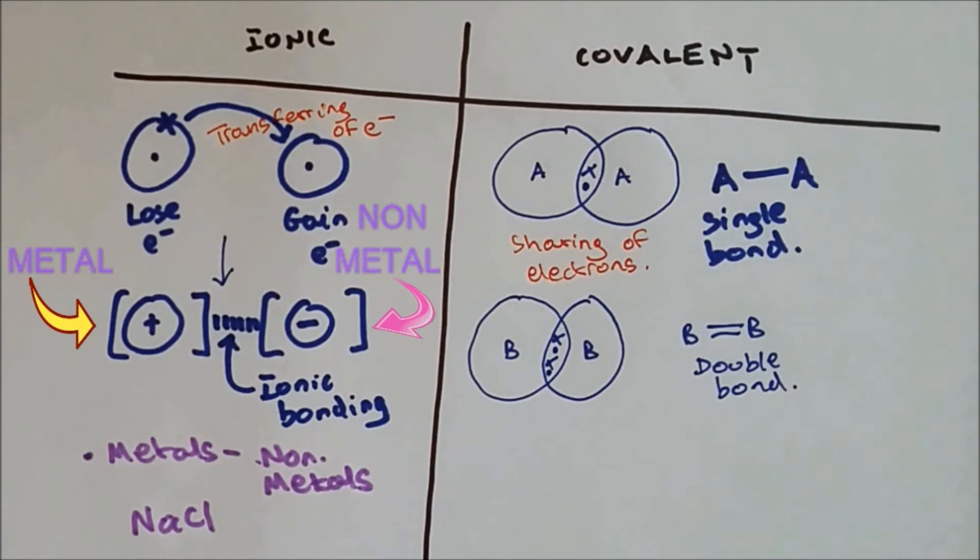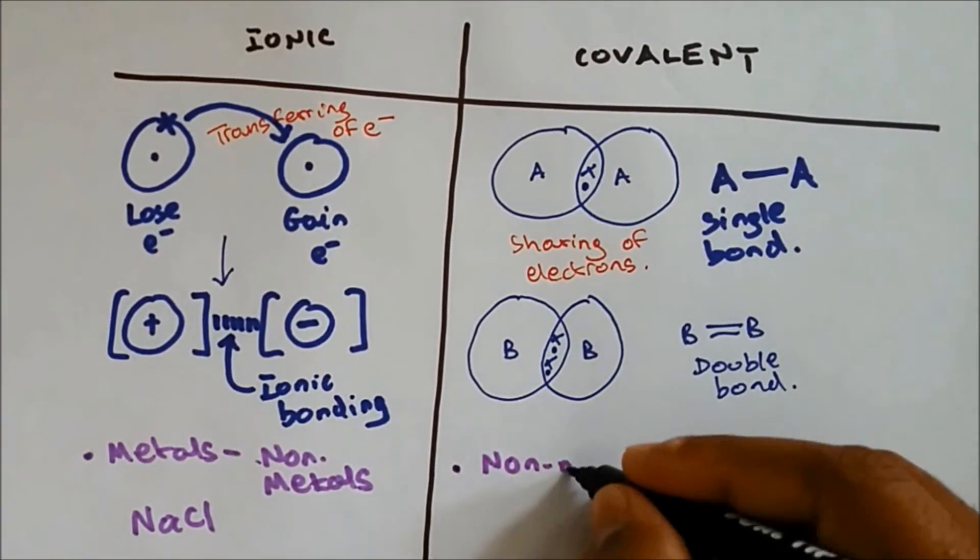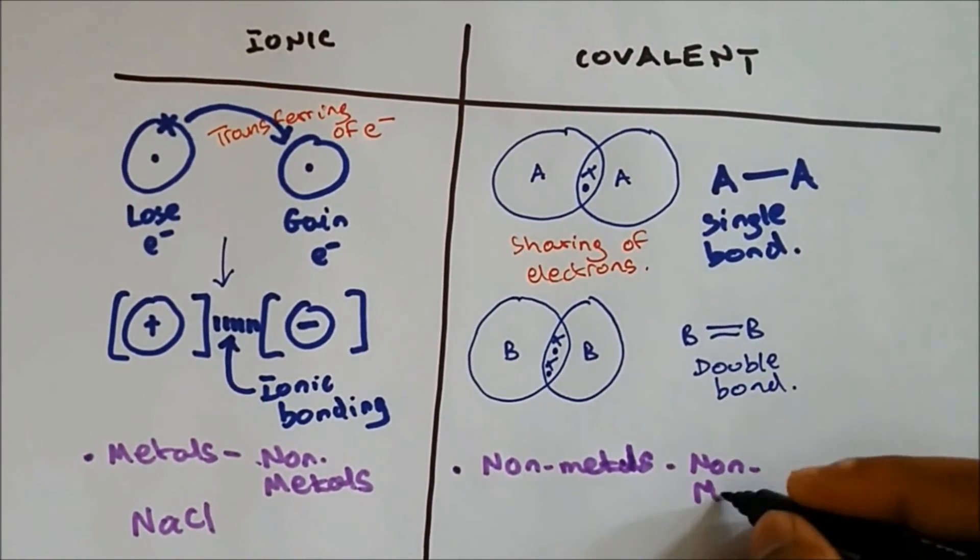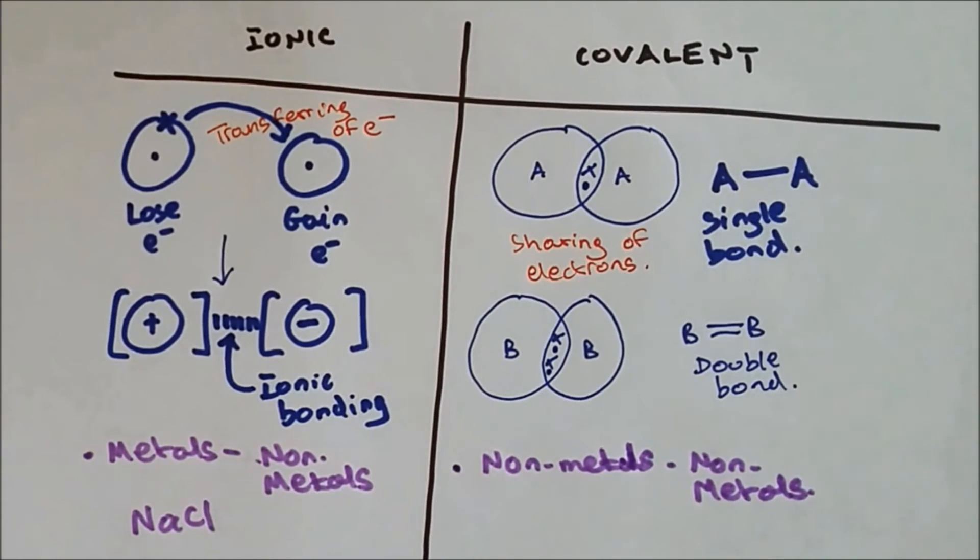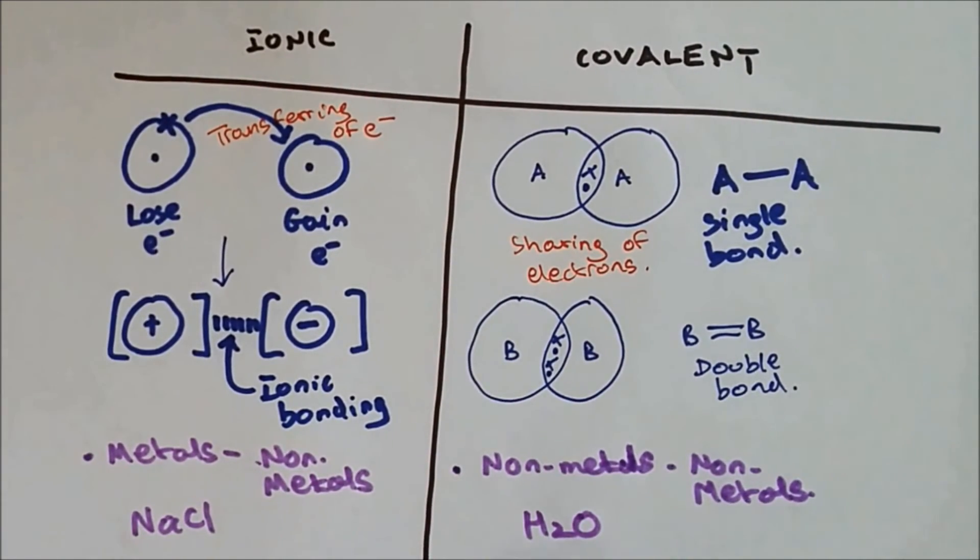But when it comes to covalent bonding, the atoms joining together are only non-metals. So it happens between non-metals and non-metals. And a good example of this would be H2O. Hydrogen is non-metal and oxygen are non-metals. The electrons on the hydrogen and the electrons on the oxygen are shared together to make a covalent bond.